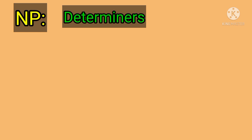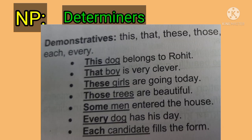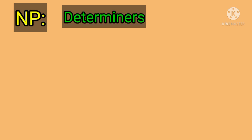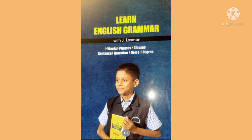Examples of articles as pre-modifiers: 'A pen is kept in the box,' 'An ugly cat ate the rat,' 'The man spoiled the plan.' Examples of demonstratives as pre-modifiers: 'This dog belongs to Rohit,' 'That boy is very clever,' 'These girls are going today,' 'Those trees are beautiful,' 'Some men entered the house,' 'Every dog has his day.' Examples of possessives: 'My love is like a red red rose,' 'India is our country,' 'Her name is Mukta,' 'They have eaten their chocolates.'